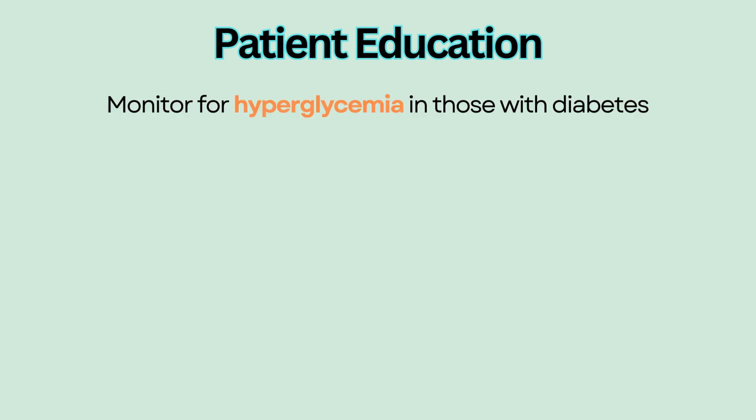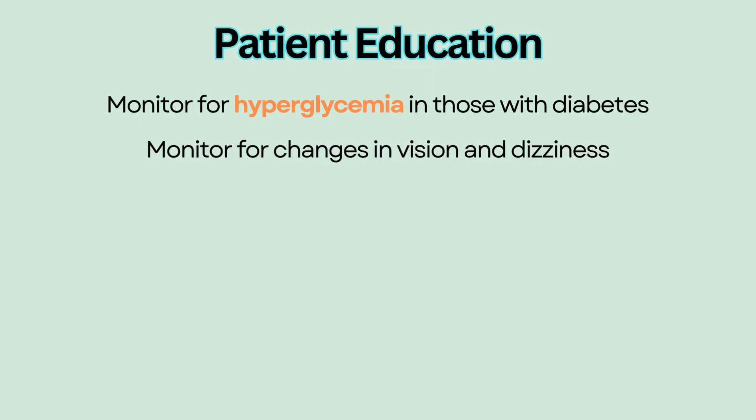Other side effects patients need to be educated on include monitoring blood glucose in those with diabetes mellitus, as isoniazid can impair the release and action of insulin, leading to hyperglycemia. Patients should also monitor for changes in vision and dizziness.